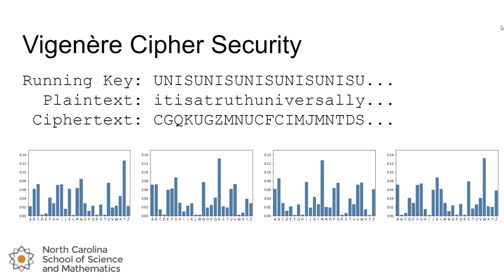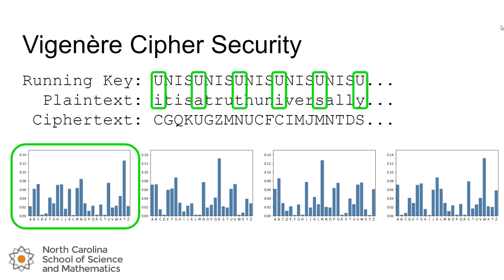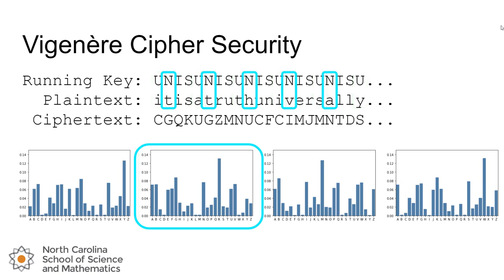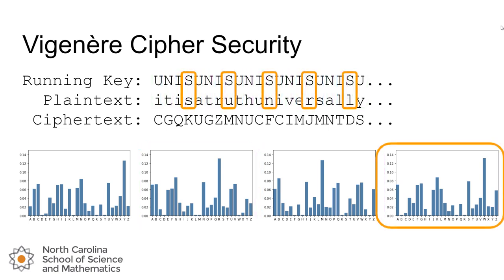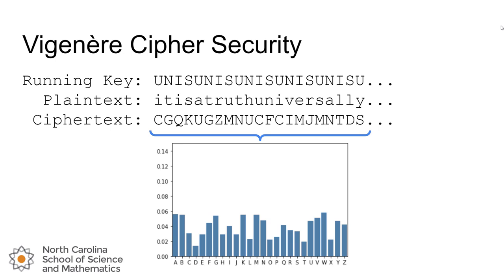We can see this again if we lengthen out our running key to the word 'unis' — with an S at the end — repeated over and over. We can see a corresponding bar chart for each grouping of letters, all of which follow the Caesar cipher pattern individually, but taken all at once, those patterns disappear. The distribution is flattened out even more — now no single character has a frequency over 6%, and most characters have a frequency above 2%. So all of those predictable variations from the Caesar cipher disappear when we use the Vigenère cipher. In fact, the longer the keyword used to generate the running key, the flatter the distribution in the cipher text will become.